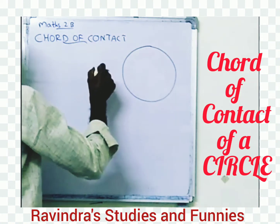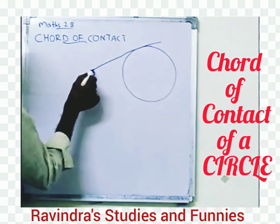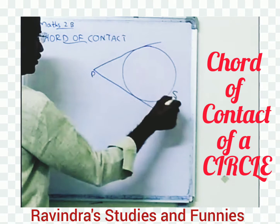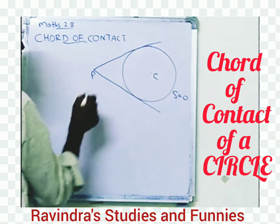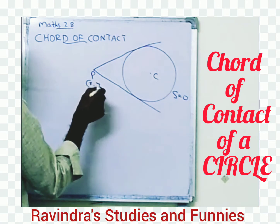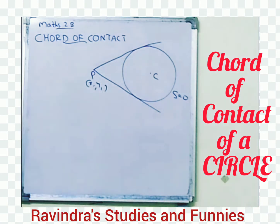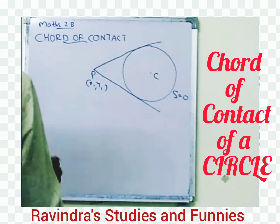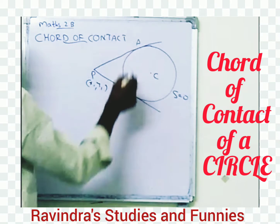Suppose you are drawing two tangents from an external point to a circle s equal to 0, whose center is c. The point is x1 comma y1. Let us suppose these tangents are meeting the circle at A and B.